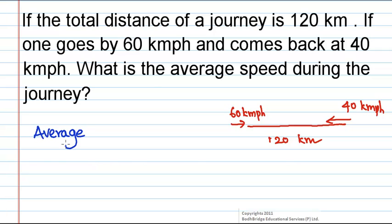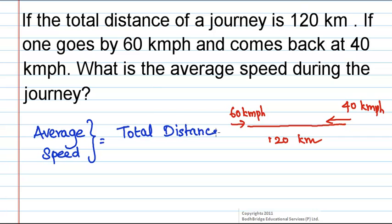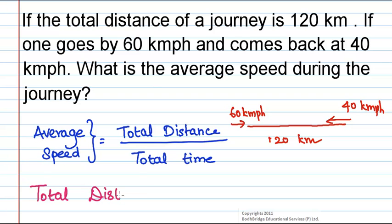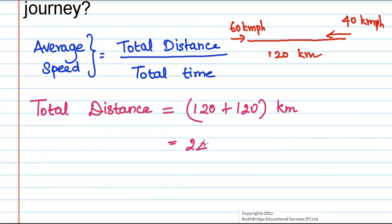We know that average speed is equal to total distance divided by total time taken. Since he goes 120 kilometers and comes back 120 kilometers, the total distance is equal to 120 plus 120 kilometers, which is equal to 240 kilometers.